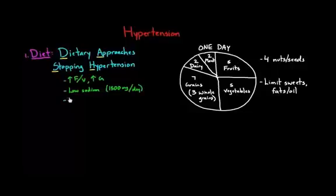And finally, the DASH diet says that if you drink alcohol, that you should really try to limit your alcohol to less than two servings of alcohol in a day. So less than or equal to two servings of alcohol in a day.